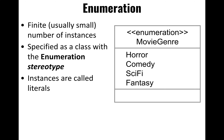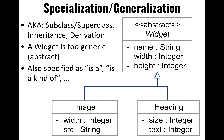We can also specify generalization and specialization using the empty arrow. We can also declare a class as abstract, meaning we don't intend to ever have an actual instance of this class. It's only there to capture common fields that other concrete classes can inherit. For example, attributes like width and height might be common between images and headings.